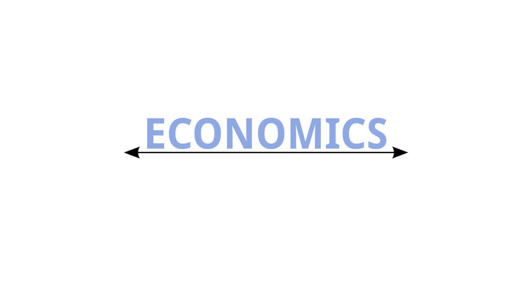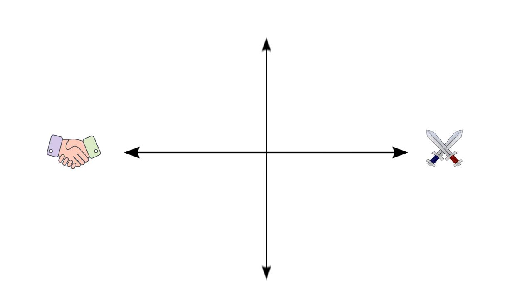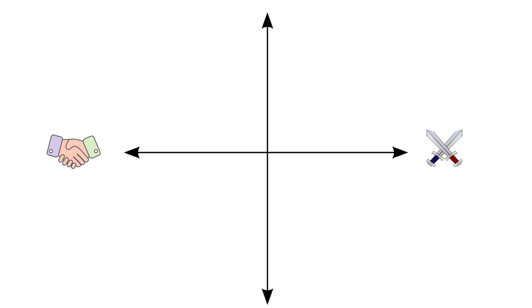The x-axis represents economics, with an economy run by a cooperative collective agency on the far left and a market left to the devices of competing corporations and individuals on the far right. The y-axis represents social stances, with the very top representing a complete obedience to authority and the very bottom representing a maximization of personal freedom.